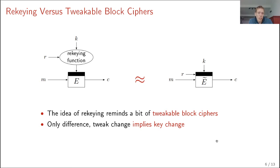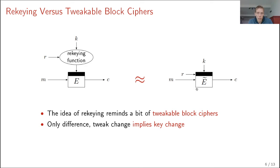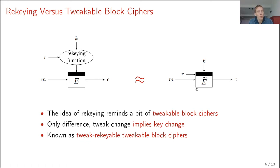There is one subtle difference: in a re-keying scheme, a re-keyer change results in a different key to the underlying block cipher. In tweakable block ciphers this is originally not the case, but there have been schemes where this is the case — known as tweak-rekeyable tweakable block ciphers. In a tweak-rekeyable tweakable block cipher, one takes a normal block cipher and builds a tweakable block cipher on top that changes the key if the tweak changes.